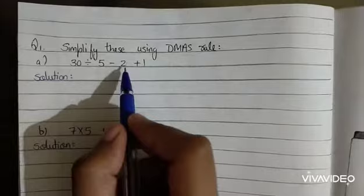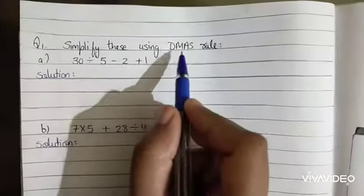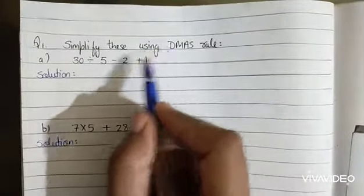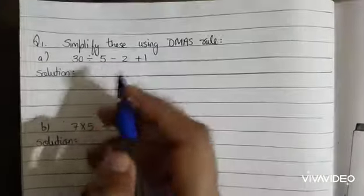30 divided by 5, minus 2, plus 1. According to DMAS rule, first we divide. Here division symbol is given, so we divide. 30 divided by 5, 6.